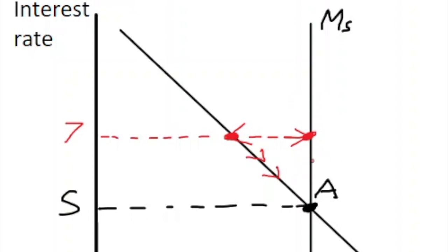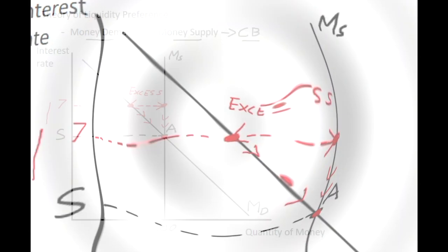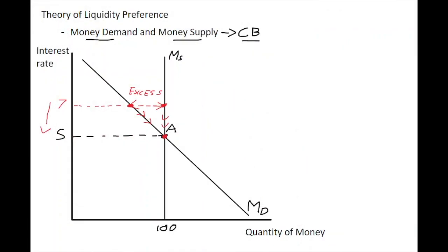If they decrease interest rates, money demand is going to start to move along the money demand curve to the right, and we'll see with money supply we move down to our equilibrium point. If we have an excess of money supply, interest rates will tend to decline to the equilibrium.